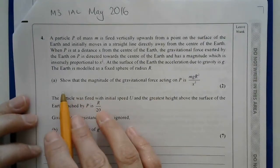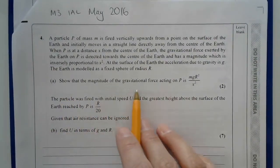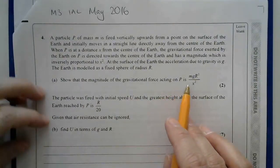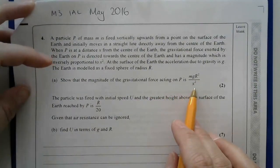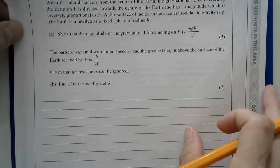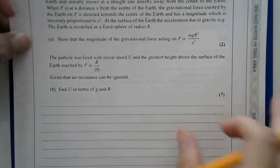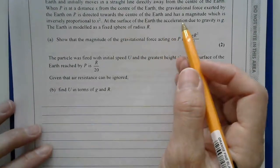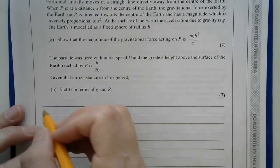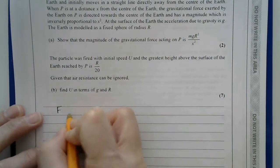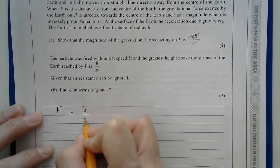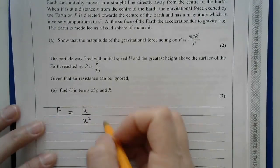So first of all, I'm asked to show that the magnitude of the gravitational force acting on P is mgr-squared over x-squared. So they told me that the force was inversely proportional to x-squared. So the force will therefore equal k over x-squared. And I need to work out k.